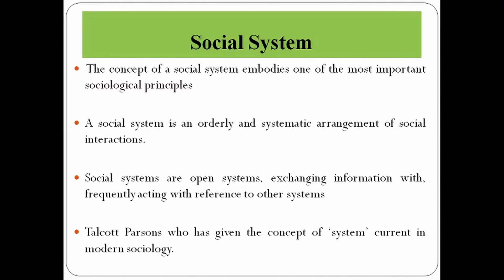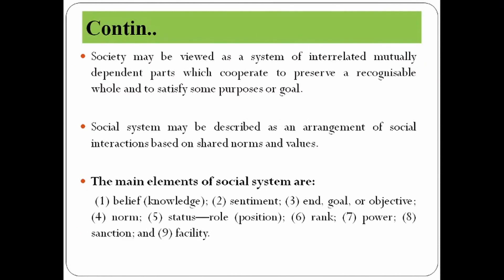Social systems are open systems, exchanging information with and frequently acting with reference to other systems. Talcott Parsons introduced the concept of the system in modern sociology. Society may be viewed as a system of interrelated, mutually dependent parts which cooperate to preserve a recognizable whole and to satisfy some purposes or goals. A social system may be described as an arrangement of social interactions based on shared norms and values.